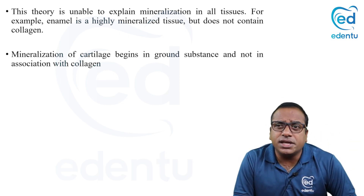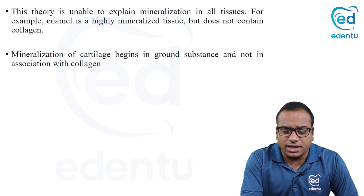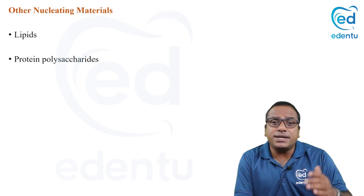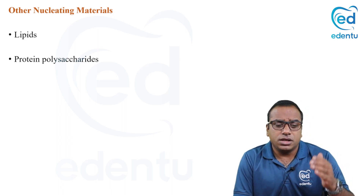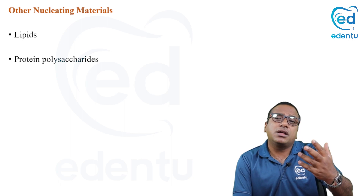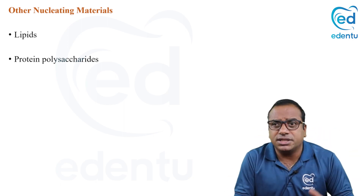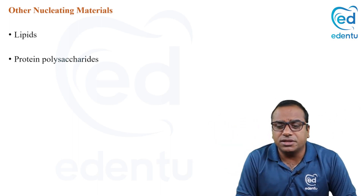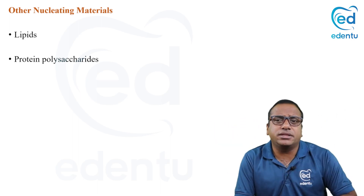Collagen is one nucleating agent, but other nucleating agents also exist — lipids and protein polysaccharides — which also have the power to initiate mineralization, acting as a template on which mineralization occurs. This is the second theory.